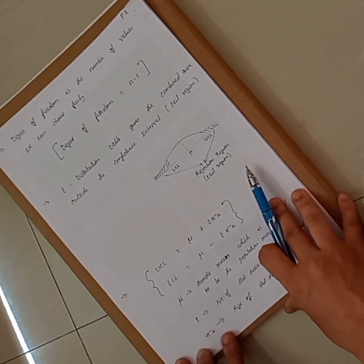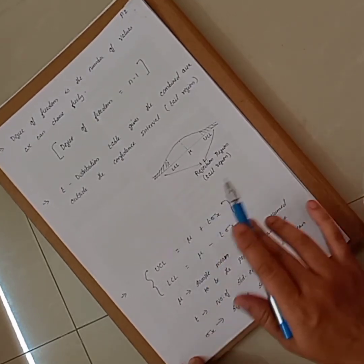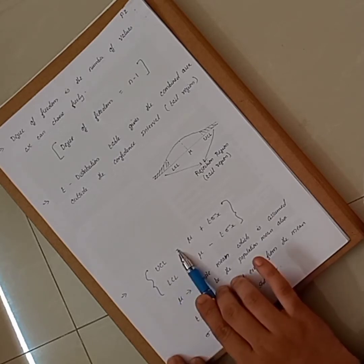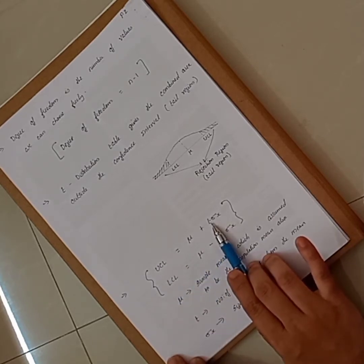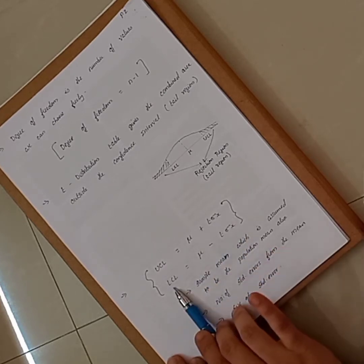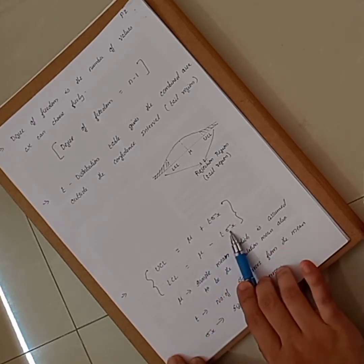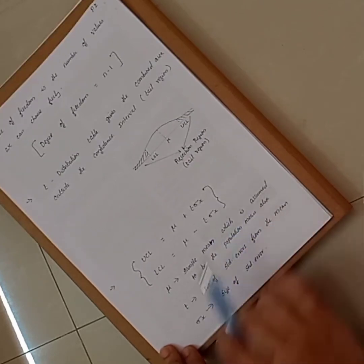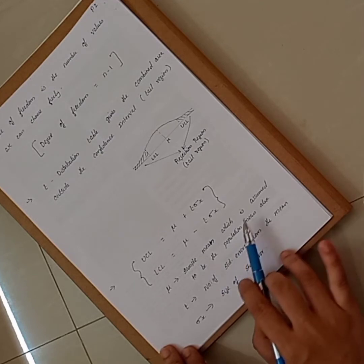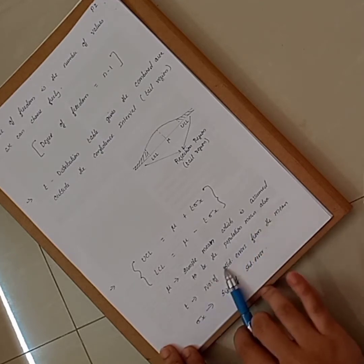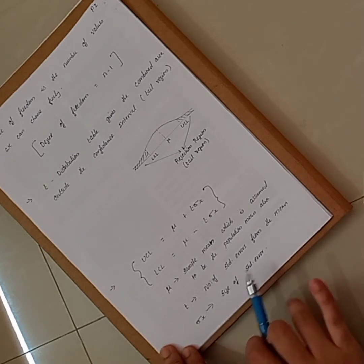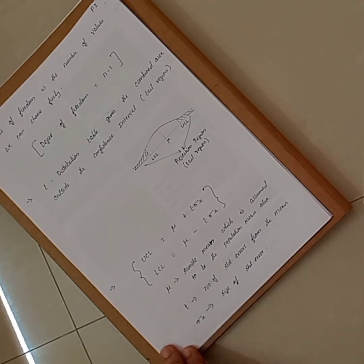Once you know the T-value, UCL is calculated as mu plus T times sigma X, where sigma X is the standard error. LCL is equal to mu minus T times sigma X. Here mu is the sample mean assumed to be the population mean, T is the number of standard errors from the mean, and sigma X is the size of the standard error.